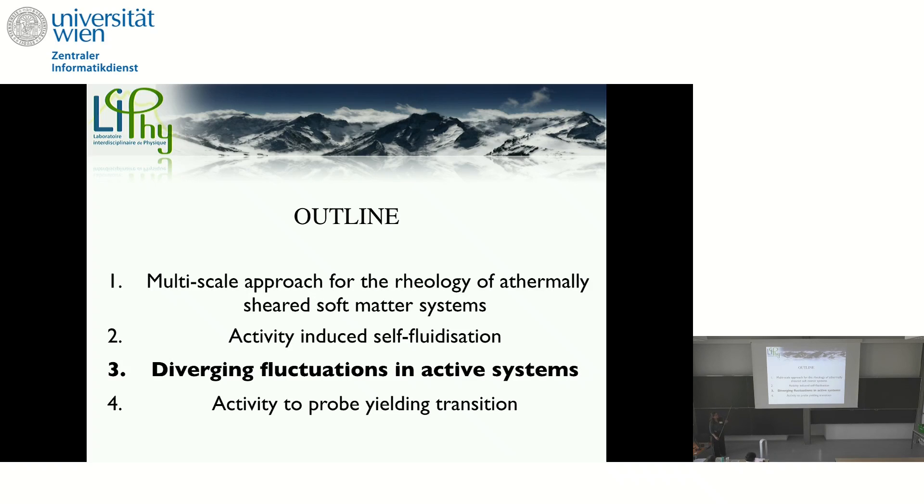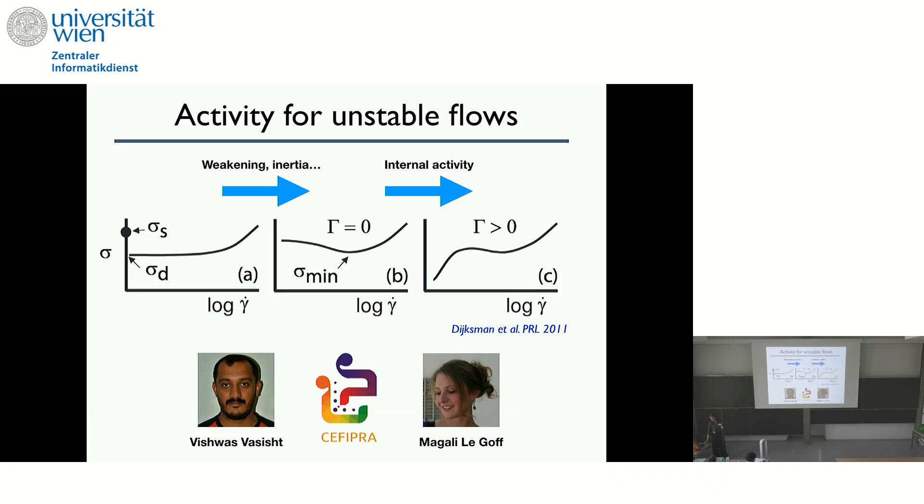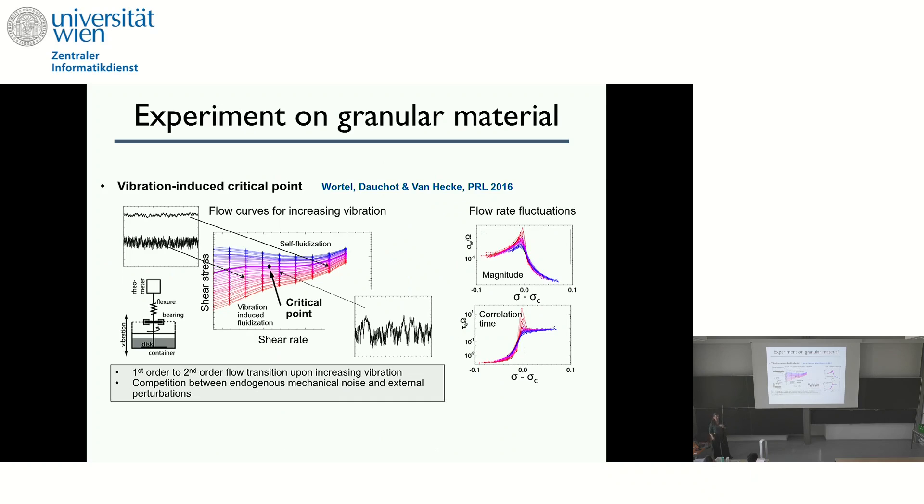So now I come to the next example, which are diverging fluctuations in active systems at finite rates. So this is a work done in collaboration with Magali, who's also here, our next speaker. And so the idea here is to combine systems that have non-monotonic flow curves and thus shear bands in the steady state together with some internal activity that we know leads to fluidization at low rates. So this work is inspired by an experiment on granular material. And so what they did here, this is a work by Bortel, Ducrot and Beneche.